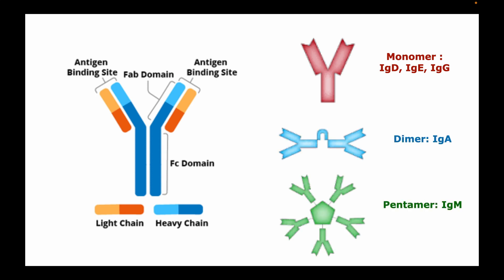Immunoglobulin A is a dimer, formed by two monomers which join at the FC portion. Immunoglobulin M is referred to as a pentamer because it consists of five monomers which join at the FC portion.